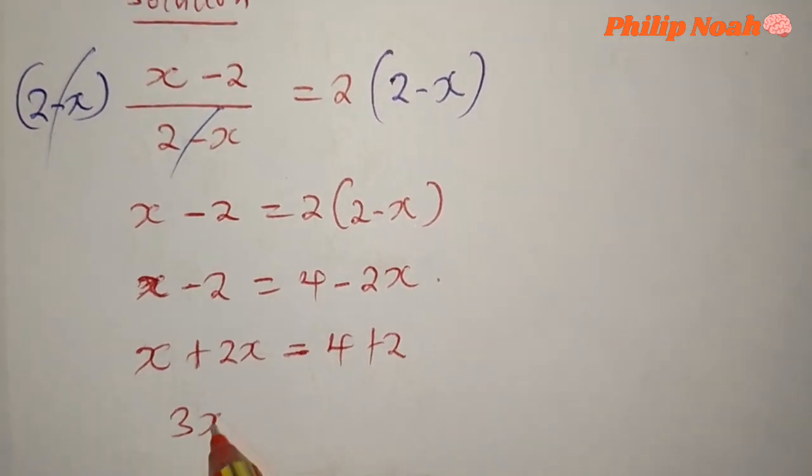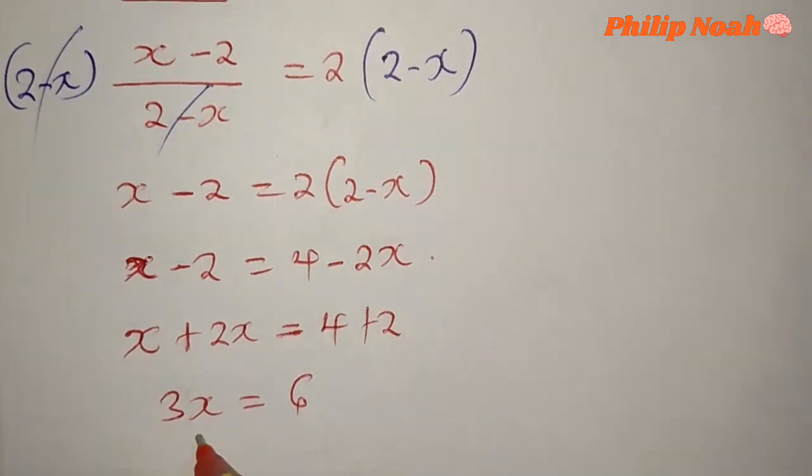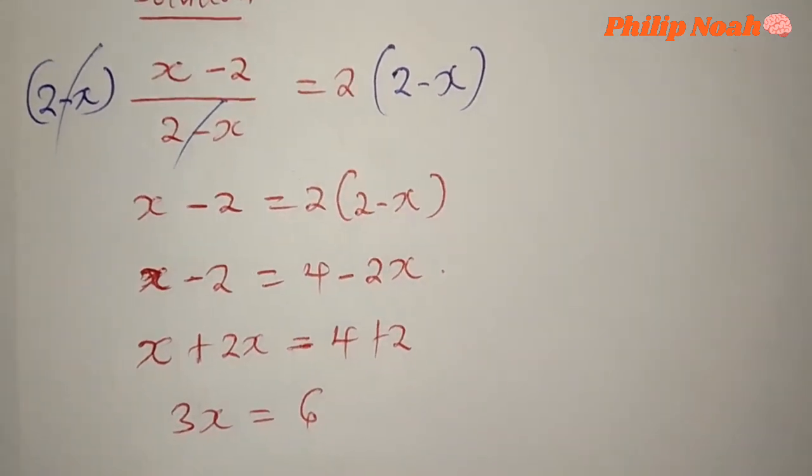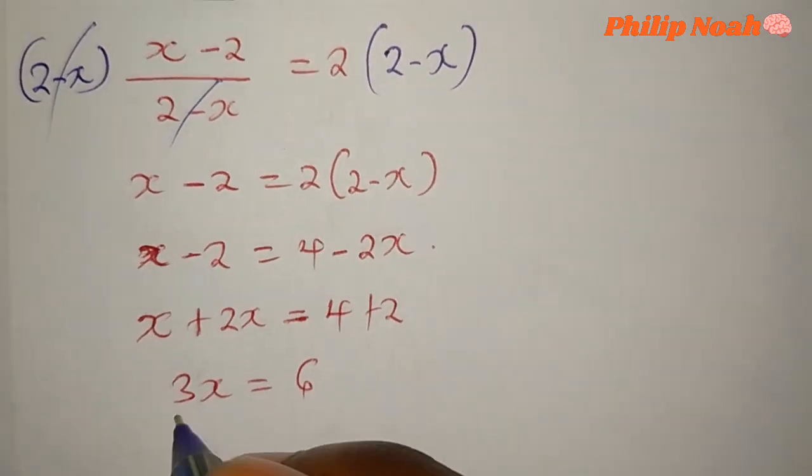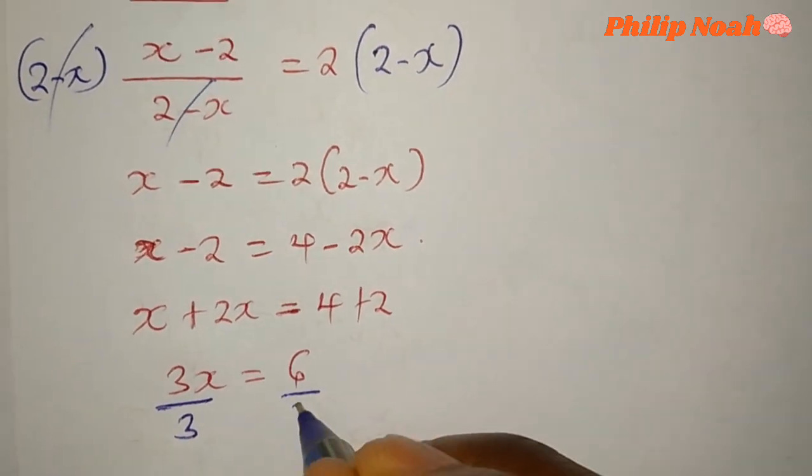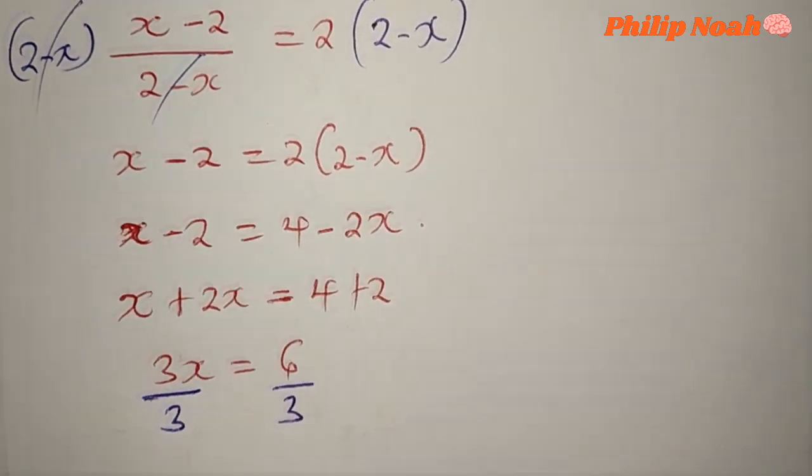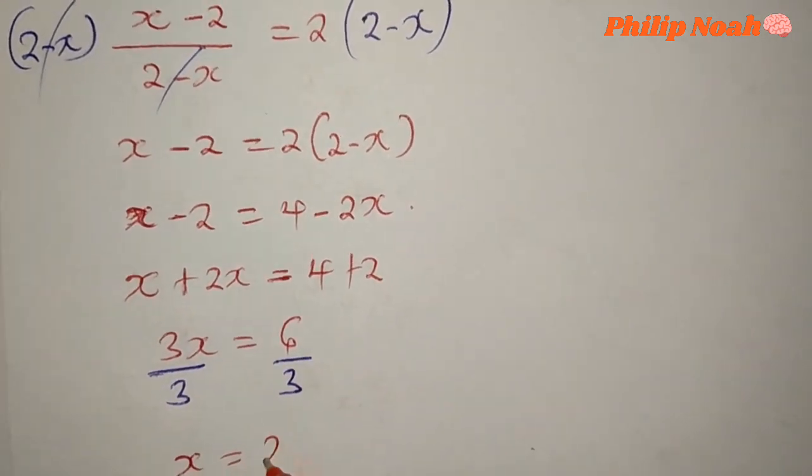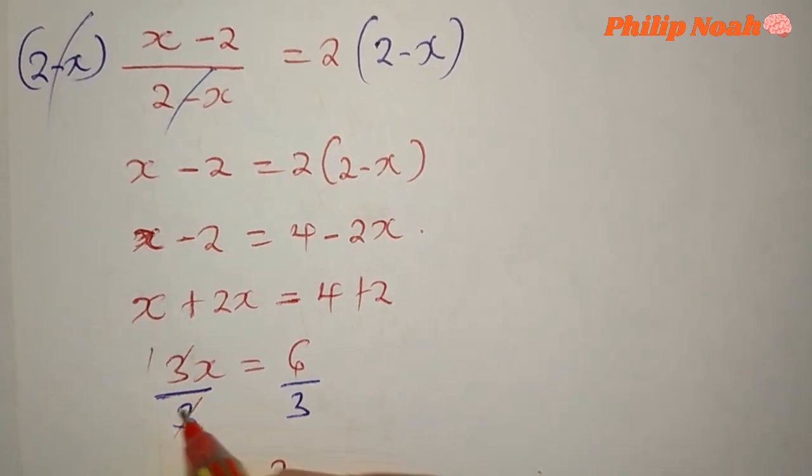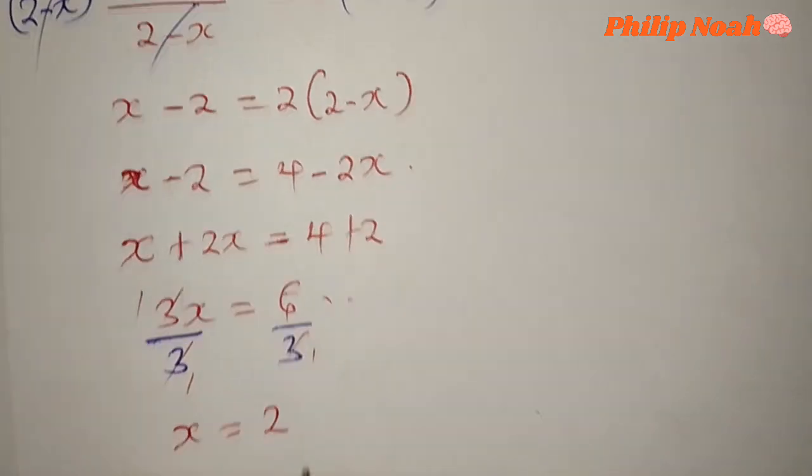So x plus 2x, we shall get 3x equals 6. To get the value of x, we shall divide by 3. And x equals 2.